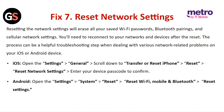For iOS, open Settings, then General, then scroll down to Transfer or Reset iPhone, then Reset, then Reset Network Settings, and enter your device password to confirm. For Android, open Settings, then System, then Reset, then Reset Wi-Fi, Mobile and Bluetooth, and click on Reset Settings.